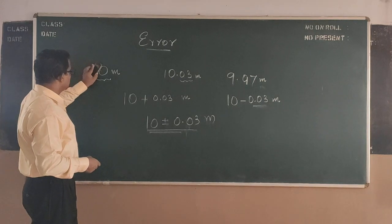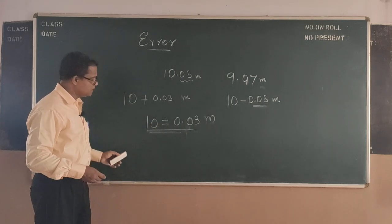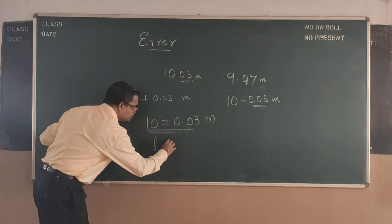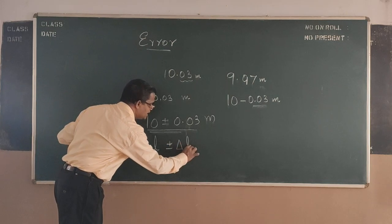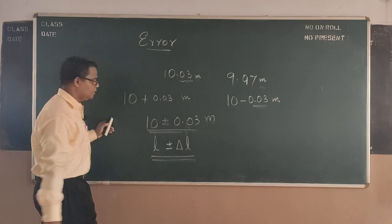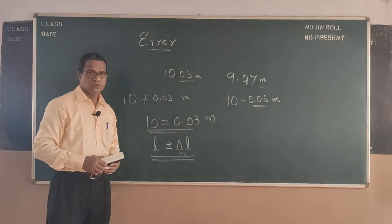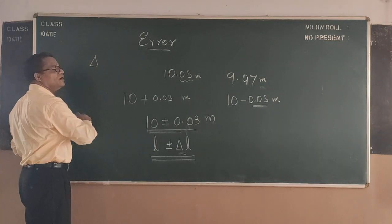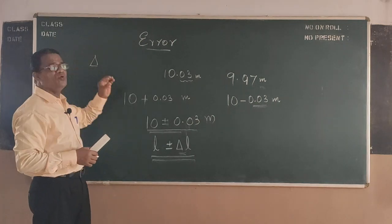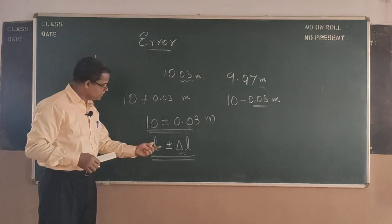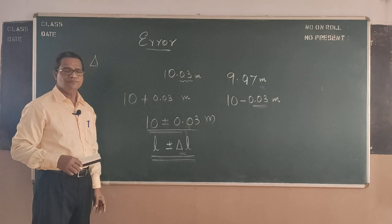Now when we represent the error in a measurement, if it is length measured, then I can express this symbolically as L plus or minus delta L. So this delta L comes from the error. Delta stands for a very small change, here representing a very small change in length.